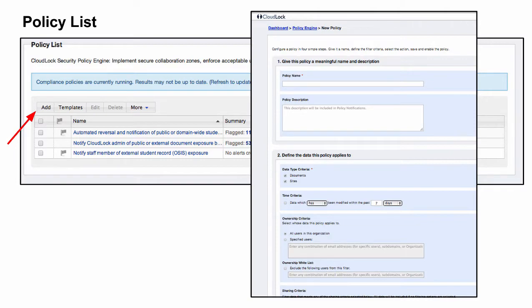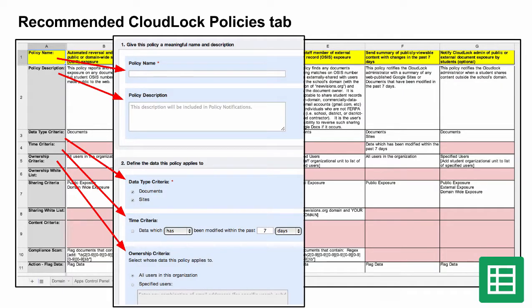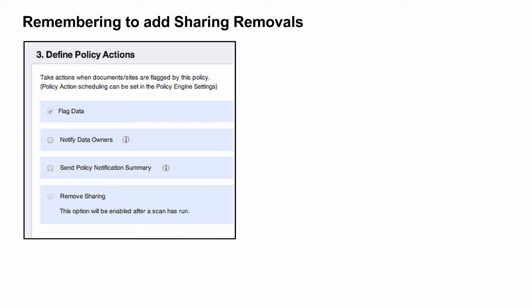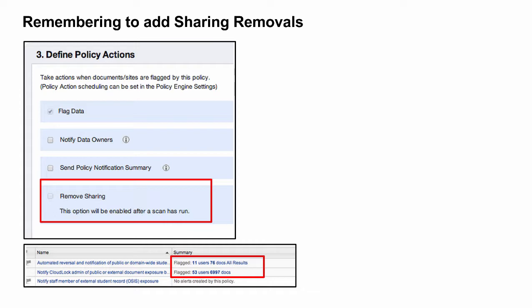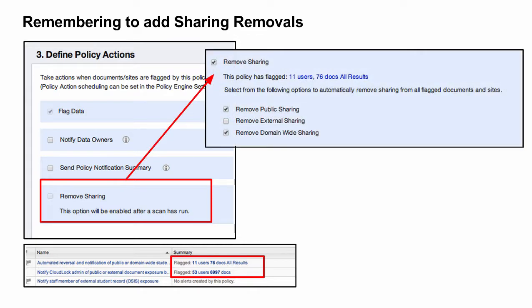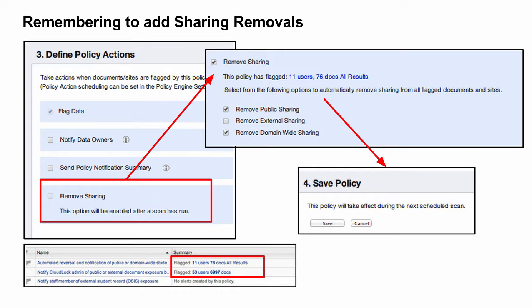Here is where your domain self-audit tool will come in handy. Column A of the Recommended CloudLock Policies tab in your self-audit tool maps exactly to the fields in the policy creation screen. Copy and paste the content from the self-audit tool and make sure you click the Save button on the bottom of the policy before exiting. It is important to note that for policies that automate sharing reversals, there is an additional step to the initial setup process. If you are creating the policy for the first time, the Remove Sharing option will be grayed out and you will not be able to select it. This is because CloudLock wants you to save the policy and run a full scan to see which documents are flagged by the policy before you automate the reversal of sharing and potentially disrupt the workflow of many users. This provides a check to ensure that the policy is performing the way you would expect it. Make sure you remember to come back after the scan has completed to add your sharing reversal selections and then resave the policy. Make sure you do this for Policy 1 and Policy 2.